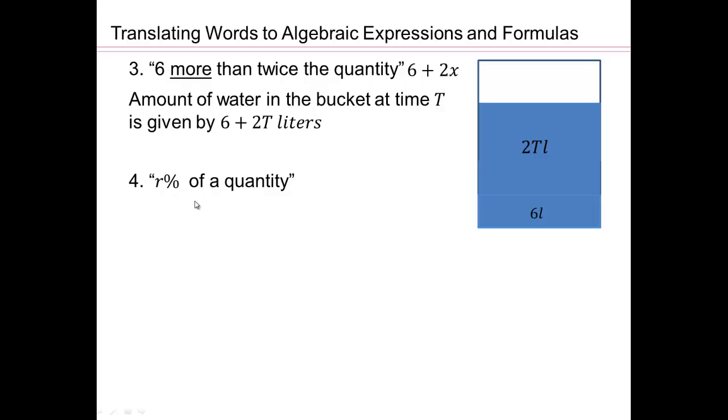If I want r percent of a quantity, you would translate that into r percent. We saw percent is a fraction over 100. So r over 100 times x. So 30% of x would be 30 over 100 times x, or 0.30x.